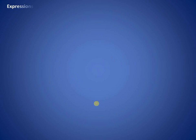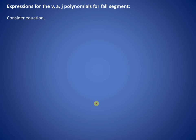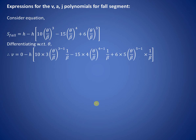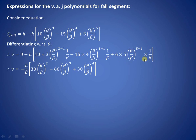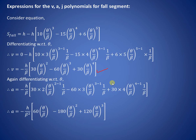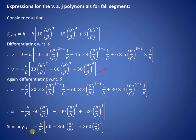Finally, to find velocity, acceleration, and jerk for the fall segment: differentiate s_fall with respect to theta using the power rule and chain rule (derivative of (θ/β)^n is n·(θ/β)^(n-1)·(1/β)). Differentiating once gives velocity, differentiating again gives acceleration, and differentiating once more gives the jerk polynomial for the fall segment.